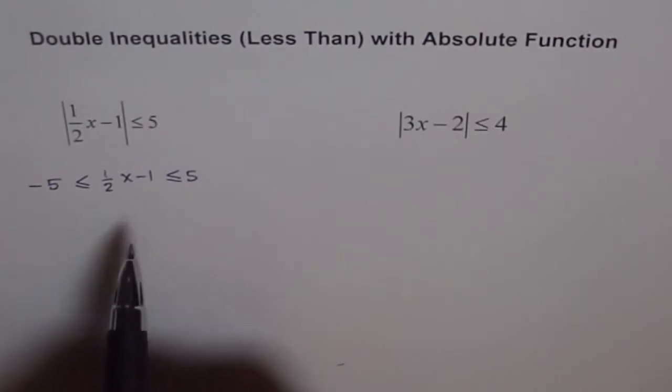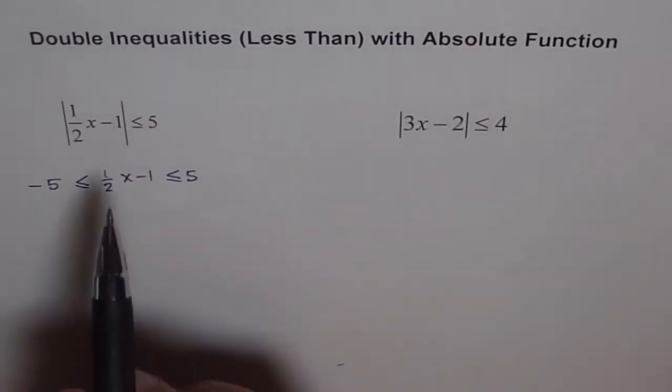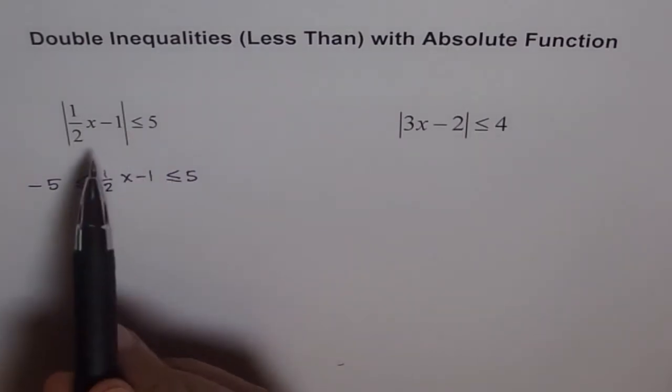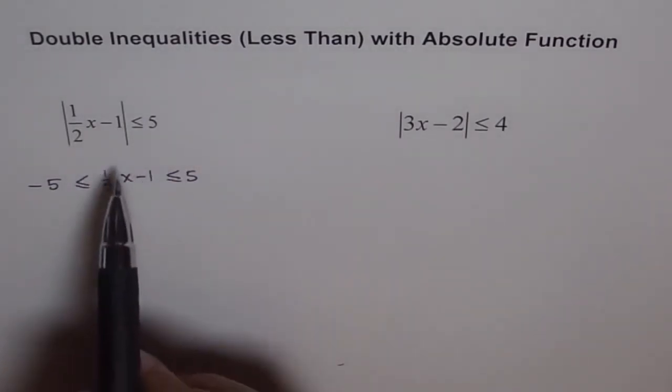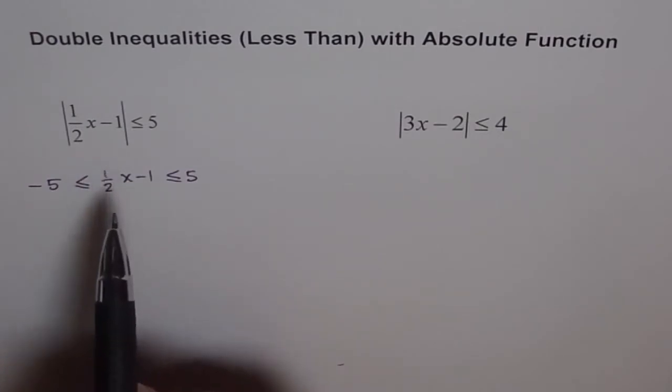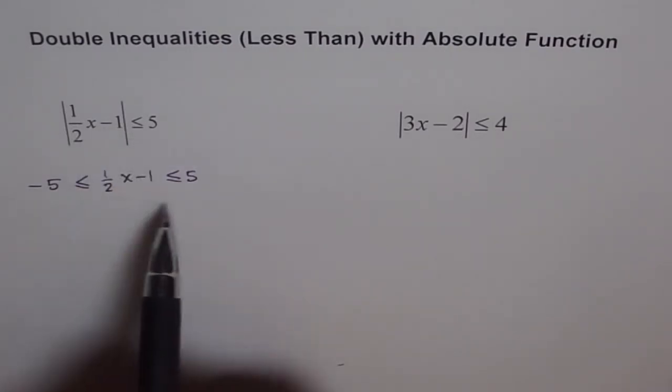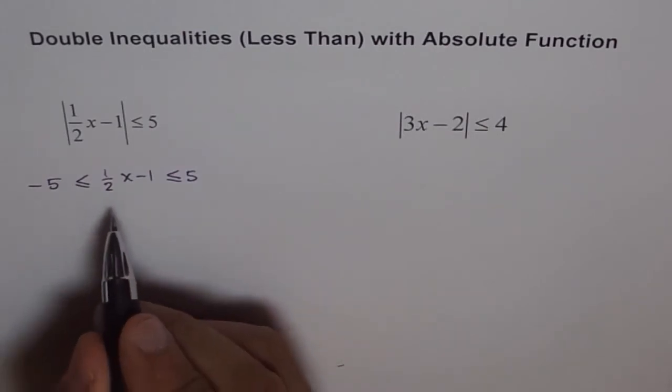Otherwise, there is another way of redefining absolute function and then splitting into two halves and solving, which I will do separately. I will explain that process when we are doing greater than equalities. For less than, I prefer this method. Now, here to solve this, we have to first get rid of 1 and then half.